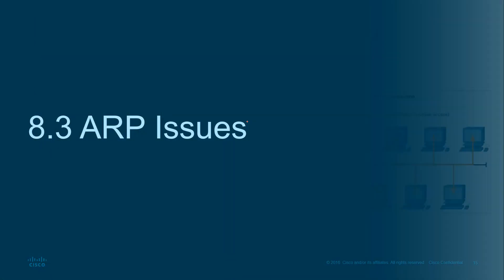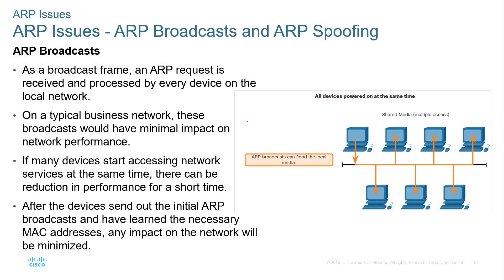ARP issues: we know that ARP sends out broadcasts, and these broadcasts could flood the local media. To prevent that, we need an appropriately set-up network. A bus or ring topology doesn't function very well in this context, so we use CSMA/CD to prevent collisions from occurring when dealing with shared media.